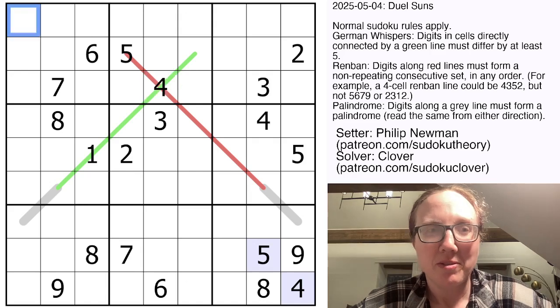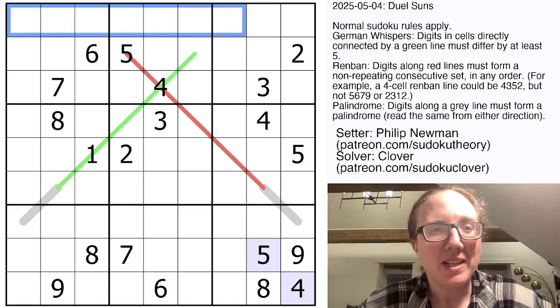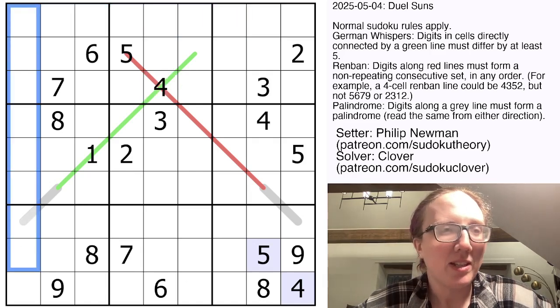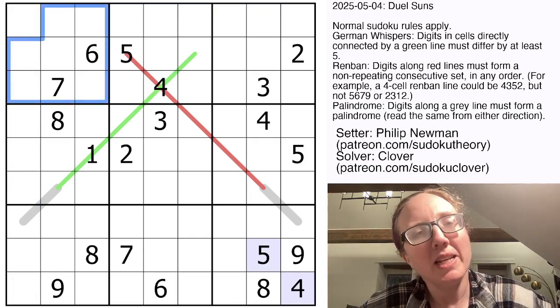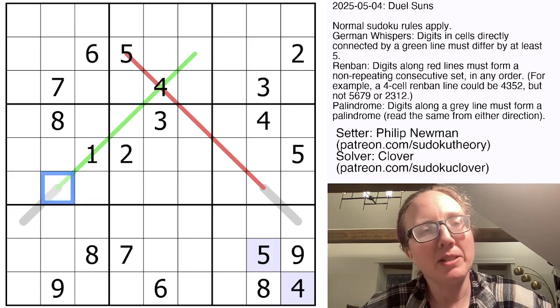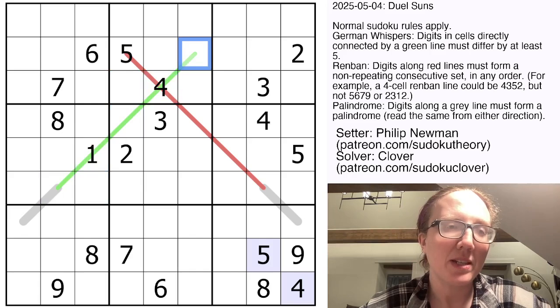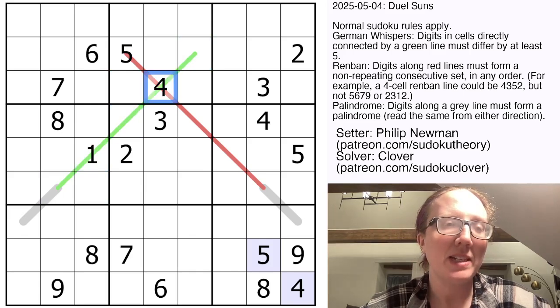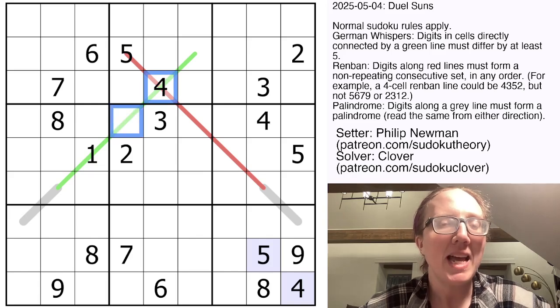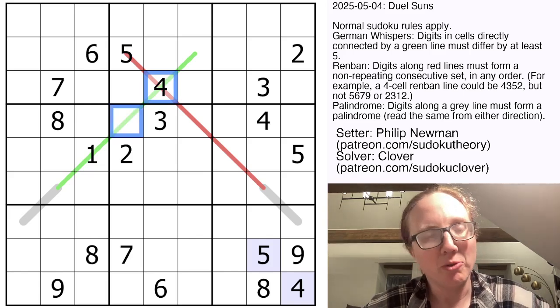So we have normal Sudoku rules. That means we're placing the digits one through nine, once each, in each row, each column, and each outlined three by three region. We have a green line in the grid that is a German Whisper line. So that means that digits that are adjacent to each other along the line, like these two digits for example, have to have a difference between them of five or more.